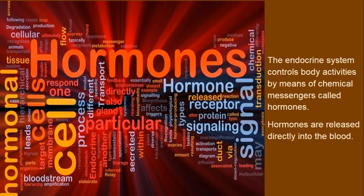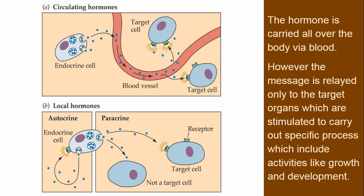The endocrine system controls body activity by means of chemical messengers called hormones. The hormones are released directly into the blood and carried all over the body. The message is received only by the target organs, which are stimulated to carry out specific processes like growth and development.